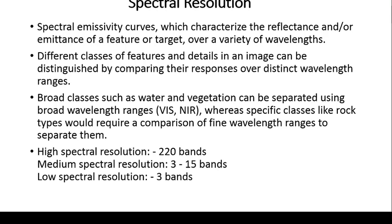To differentiate specific classes such as types of rocks or types of vegetation in a forest, we need very specific and fine wavelength ranges. Similar to spatial resolution having high and low classifications, spectral resolution has three types: high, medium, and low. High spectral resolution uses around 220 color bands to classify very fine objects. Medium spectral resolution uses 3 to 15 color bands, giving medium separation or differentiation in classes or features on the earth.